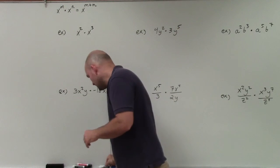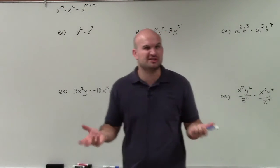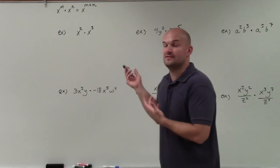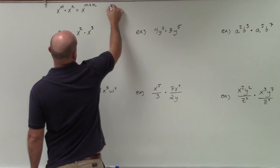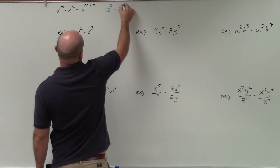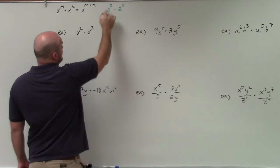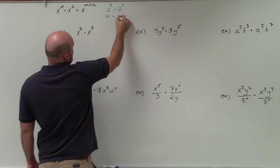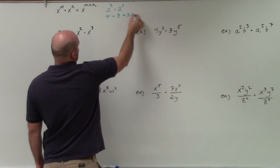I'm going to use some numbers to make sense of the product property. Let's pretend I have 2 squared times 2 cubed. We know that 2 squared is 4, and we know that 2 cubed is 8, so we know the answer is going to be 32.